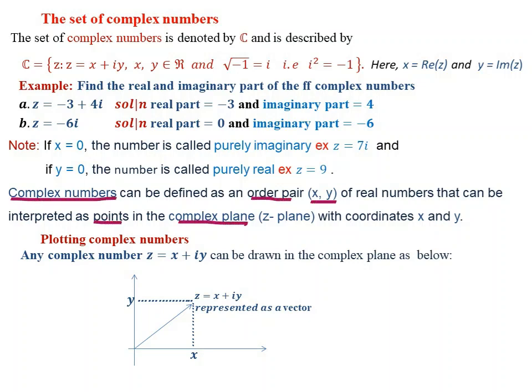Complex numbers can be defined as an ordered pair of real numbers that can be interpreted as points in the complex plane or z-plane, with coordinates x and y. Any complex number z equal to x plus iy can be drawn in the complex plane.